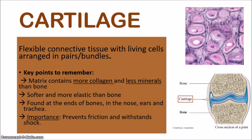Cartilage is usually found at the ends of bones, and also in our nose, ears, trachea, and bronchial tubes, giving structure to these parts of the body. Apart from this structural purpose, cartilage prevents friction and withstands shock — extremely important where it is located between bones. It helps to prevent bones from rubbing together and causing friction. If you were to take a fall, the cartilage helps to absorb some of that shock, making it less likely for the bone to actually break.